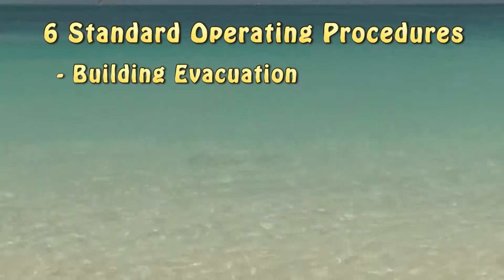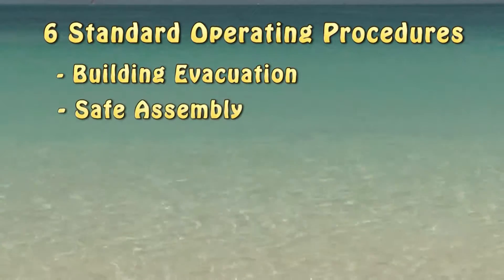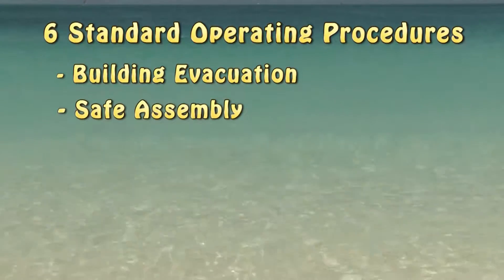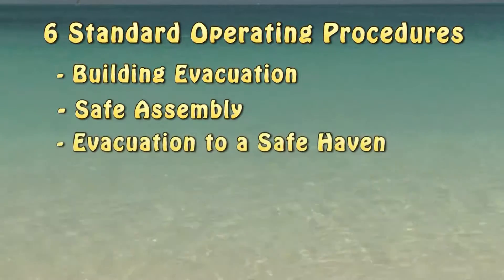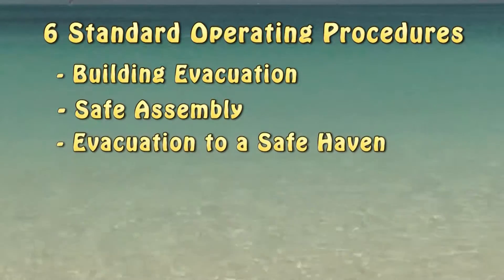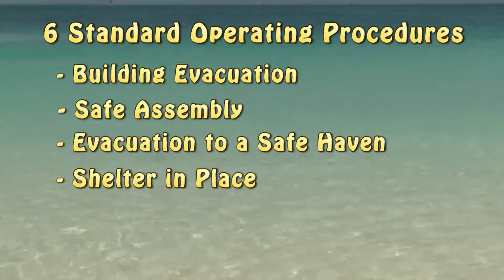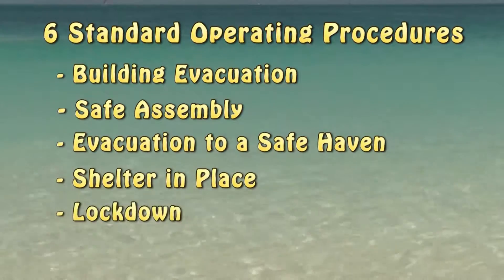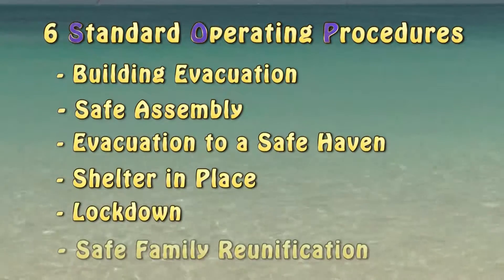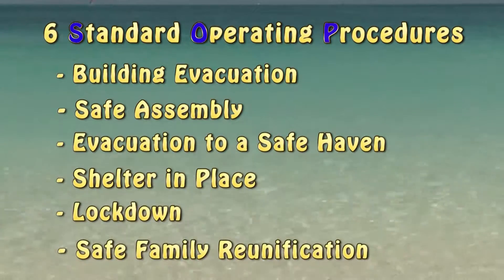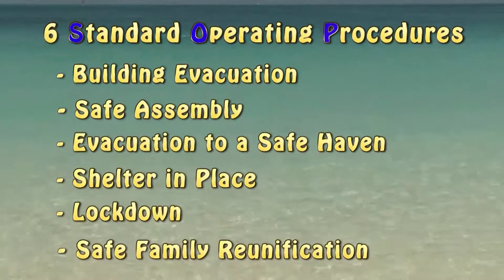There are six procedures: building evacuation, safe assembly, evacuation to a safe area, shelter in place, lockdown, and safe family reunification.